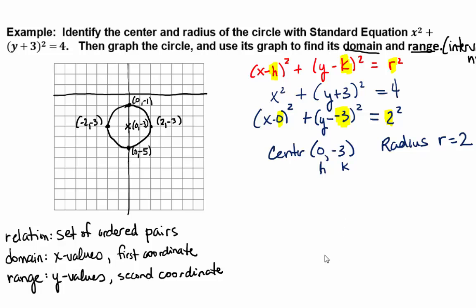So reading domain and range off a graph, you always want to go from smallest to largest. And domain, remember domain, refers to the x values. We're talking about the x-axis that goes from left to right.